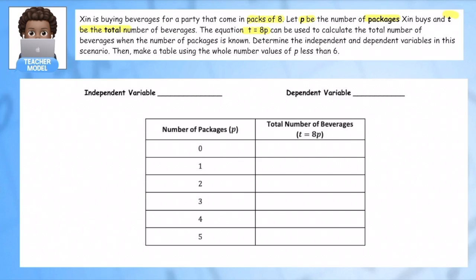T equals 8P, so where P is the number of packages. So every time I buy a package, I multiply it by 8 to figure out the total. So just thinking about my system, when I have a package, I know I'm going to multiply it by 8 and that's going to tell me what my total is. So my independent variable is P, the number of packages, because once I know the number of packages, I'm going to figure out the total T.